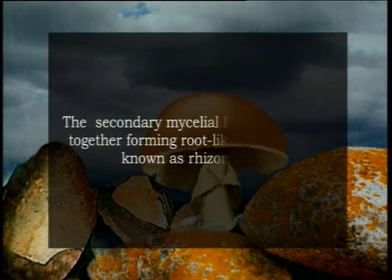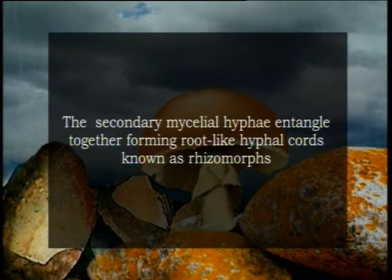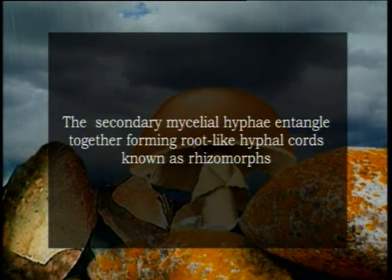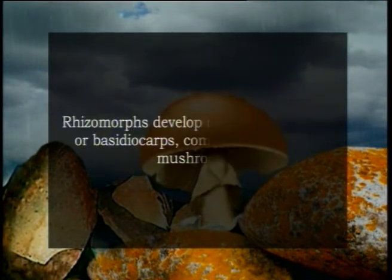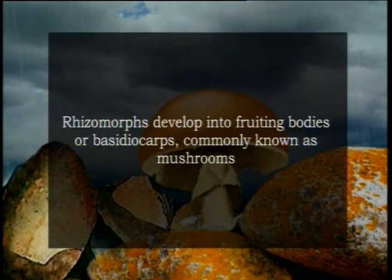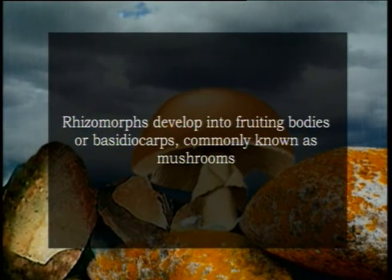These dikaryotic mycelial hyphae traverse the soil in all directions and may live for a long time before forming the fruiting bodies. When conditions are favorable, the secondary mycelial hyphae entangle together forming root-like white hyphal cords known as rhizomorphs. Rhizomorphs then develop into fruiting bodies or basidiocarps, commonly known as mushrooms.